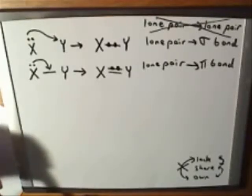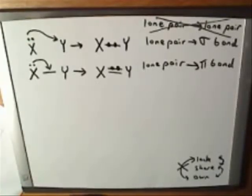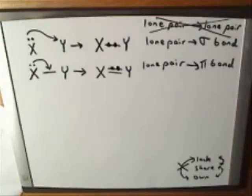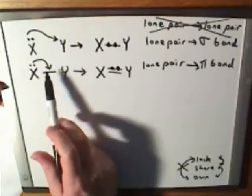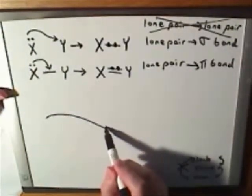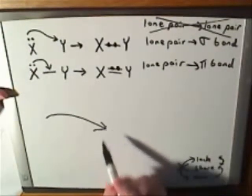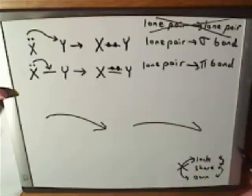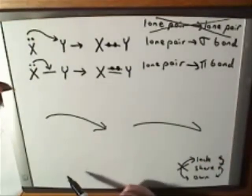I want to go back to something I mentioned in the introduction to the videos, which is that in these videos we're focusing on double-headed arrows, not single-headed arrows. So we are not going to be focusing on radical mechanisms. Notice that all the arrows I've drawn so far have been double-headed. This is what a double-headed arrow looks like — I haven't drawn any single-headed arrows; they've all been double-headed.